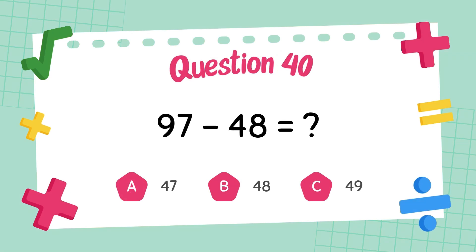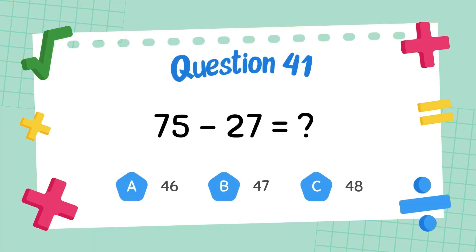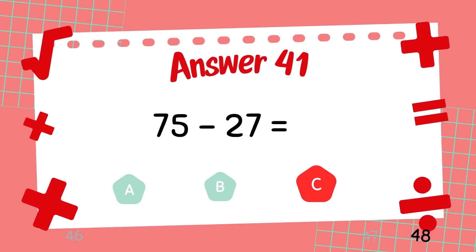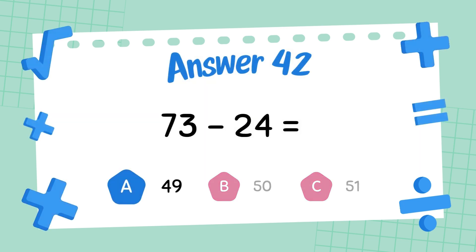What is ninety-seven minus forty-eight? The answer is forty-nine. What is seventy-five minus twenty-seven? The answer is forty-eight. What is seventy-three minus twenty-four? The answer is forty-nine.